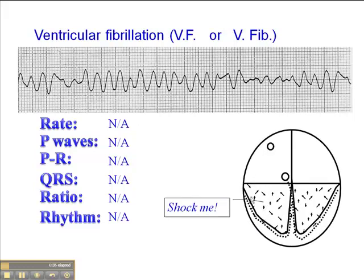What happens in ventricular fibrillation is that there are multiple ectopic foci in the ventricle, and these are firing off in different directions. When two waves of depolarization run into one another, they cancel each other out. Consequently, the ventricles become a quivering mass of myocardium, and when that occurs, there's no cardiac output.